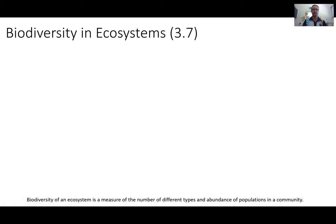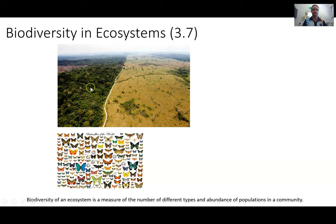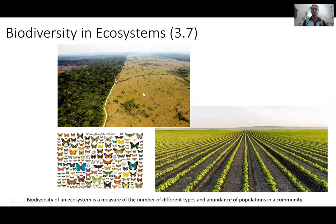So biodiversity in ecosystems. Biodiversity of an ecosystem is a measure of the number of different types and abundance of populations in a community. Here we have an image of a forest that has been cleared due to deforestation. Where there was once high biodiversity, there can now be low biodiversity. The reason why this occurs is generally for farming and agricultural purposes. And when land is cleared, it's generally to make way for one type of crop, whether that's to grow wheat or to grow a potato. When one type of crop is being grown, it's called a monoculture. Obviously, biodiversity is largely decreased due to human impact and farming.